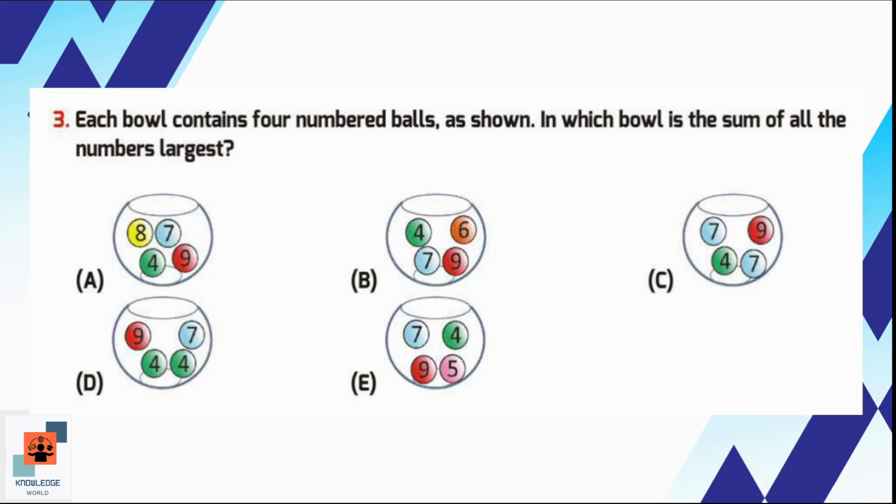For option A, sum of 8, 7, 4, and 9 is 28. For option B, the sum is 26. If we add 7, 4, 7, and 9, the total is 27. Sum for option D is 24 and sum for option E is 25. Now we can see 28 is largest of all. Option A is the correct option here.